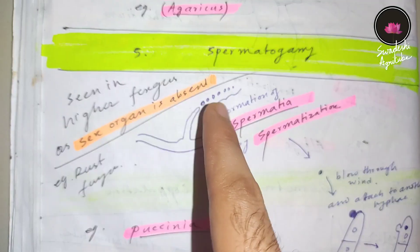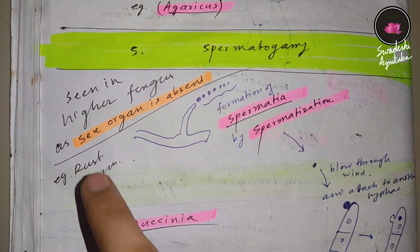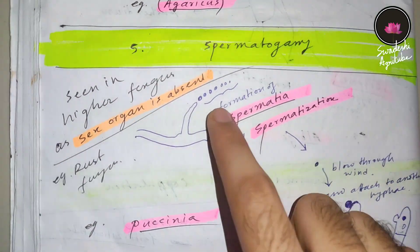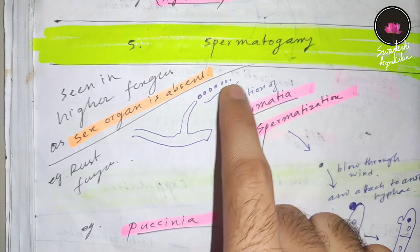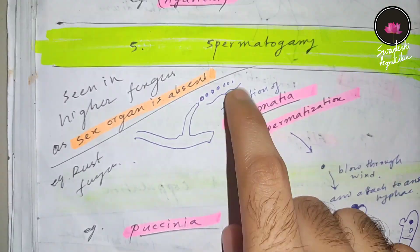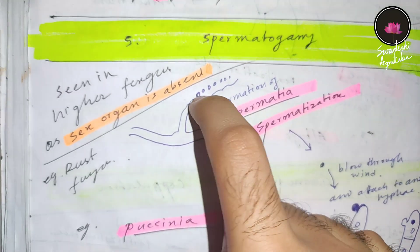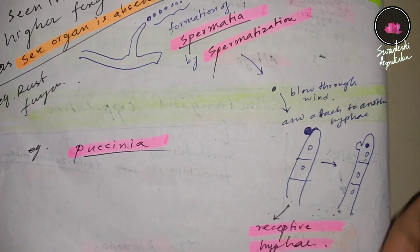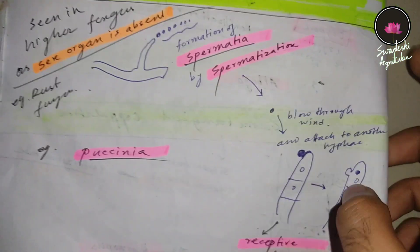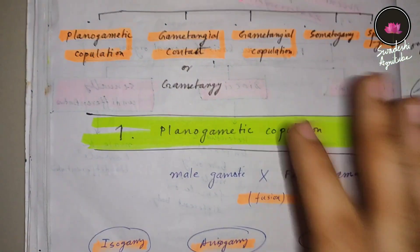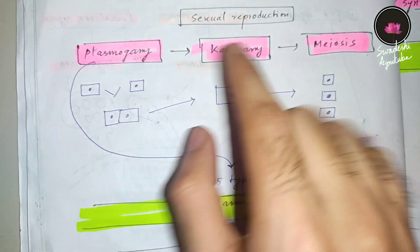The fifth type is spermatogamy, another example of plasmogamy shown by higher fungi because they lack sex organs — like the rust fungus. In this case, somatic hyphae form spores called spermatia through a process called spermatization. These spermatia are spread by air and come into contact with receptive hyphae. Then the protoplasts are mixed up. All of these are examples of plasmogamy.